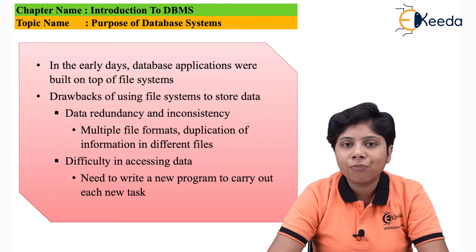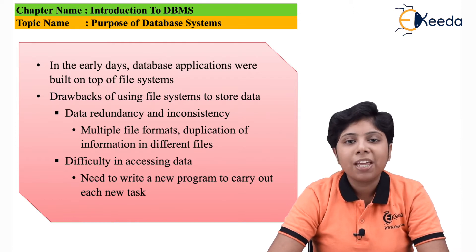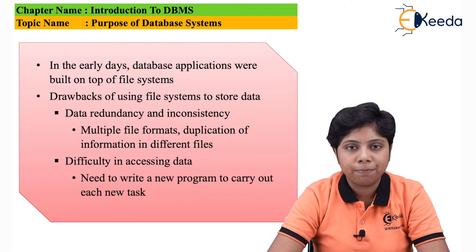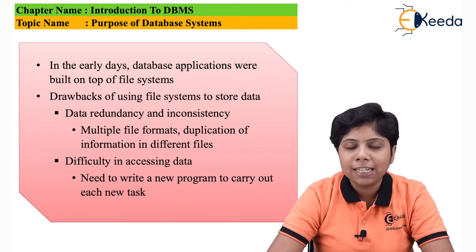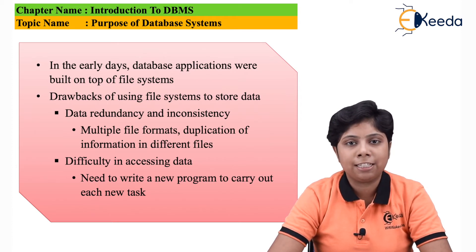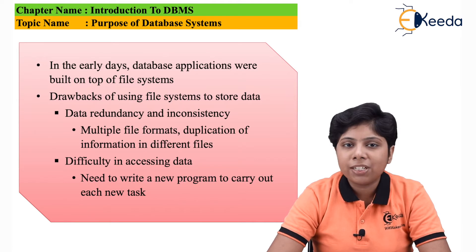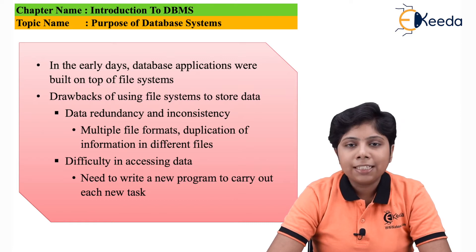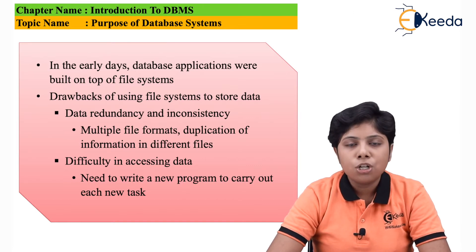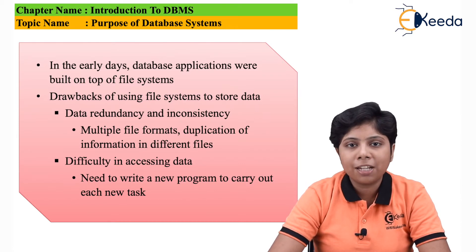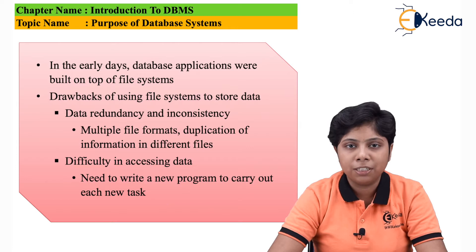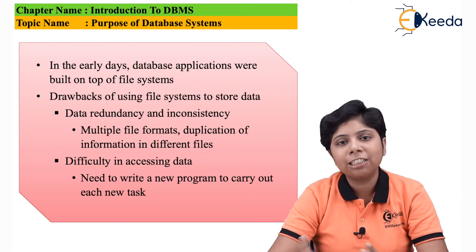The main problem of this file-type processing — which is the basic reason we need a database system — is discussed today. The first disadvantage is data redundancy and inconsistency. Data redundancy means the duplication of data. For example, if a particular student belongs to two departments — music and maths — then the student's personal data like address, contact number, and email ID must be added to both the music department and the maths department.